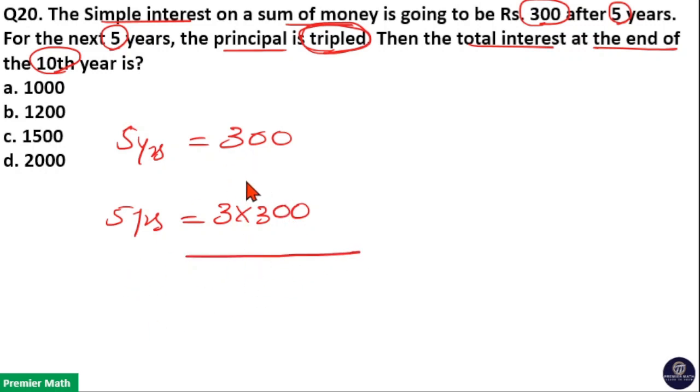So, total interest becomes 300 plus 900, 1200 rupees after 10 years. So, option B is your answer.